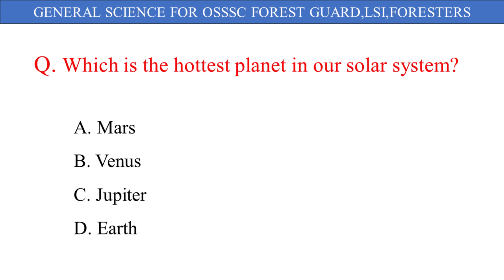Which is the hottest planet in our solar system? The given options are: A. Mars, B. Venus, C. Jupiter, D. Earth. And the correct answer is option B: Venus.